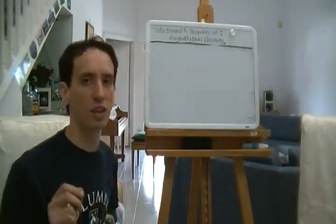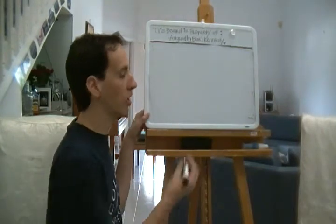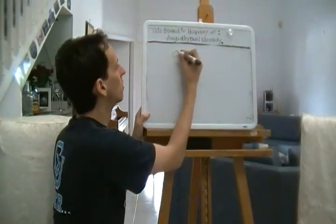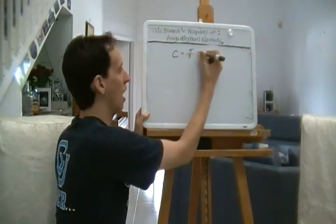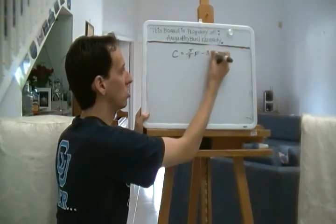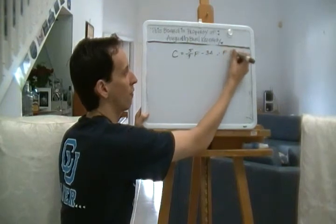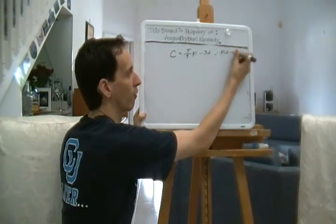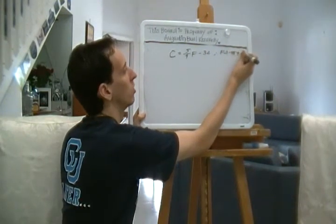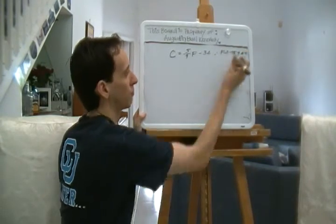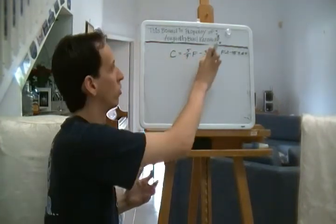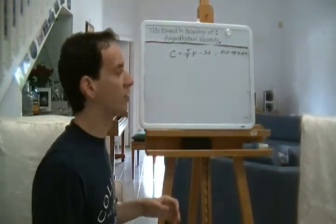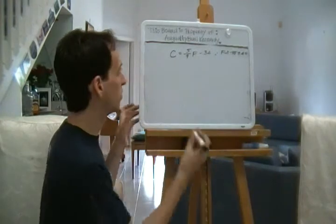Find a formula for the inverse function and interpret it. What is the domain of the inverse function? We've got the formula C equals 5 ninths F minus 32, so long as F is greater than or equal to negative 459.67. Now if you remember the basic idea of an inverse function, we have C equals this with F. Let's find out what F is in terms of C.